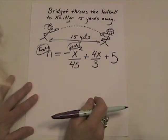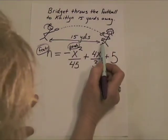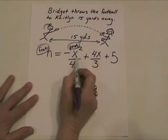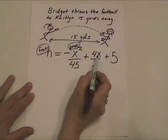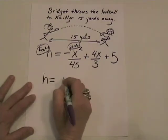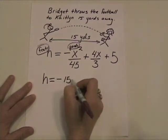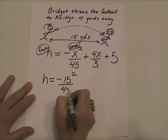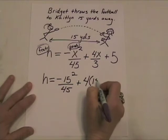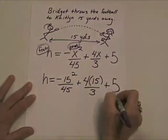The question is: how high is the ball going to be when it reaches Kaitlyn if they're 15 yards apart? All we have to do is take the value 15 and plug it in for x. So the height of the ball in feet will be equal to the opposite of 15 squared over 45, plus 4 times 15 over 3, plus 5.